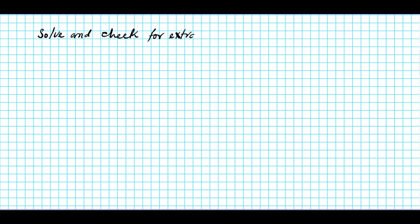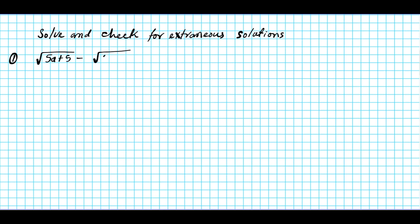The problem instructions are for us to solve and check for extraneous solutions. You always want to check your solutions after solving a radical equation for extraneous solutions, because this can get introduced when you're squaring both sides of your equation. So this is a very important step. The problem under consideration is the square root of 5a plus 5 minus the square root of 3a plus 4, equal to 1.